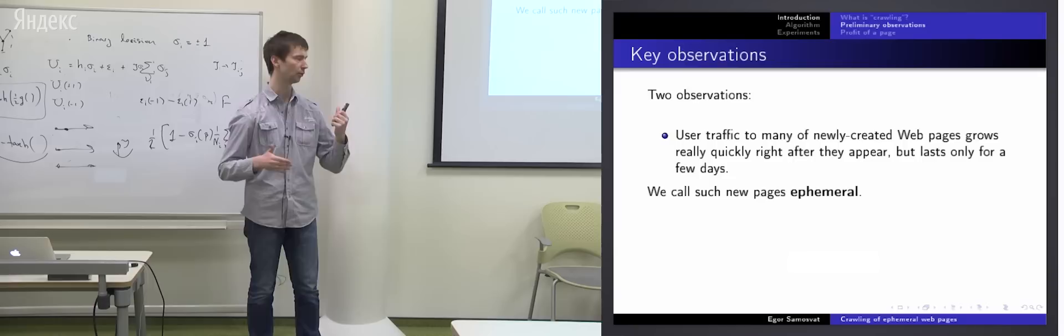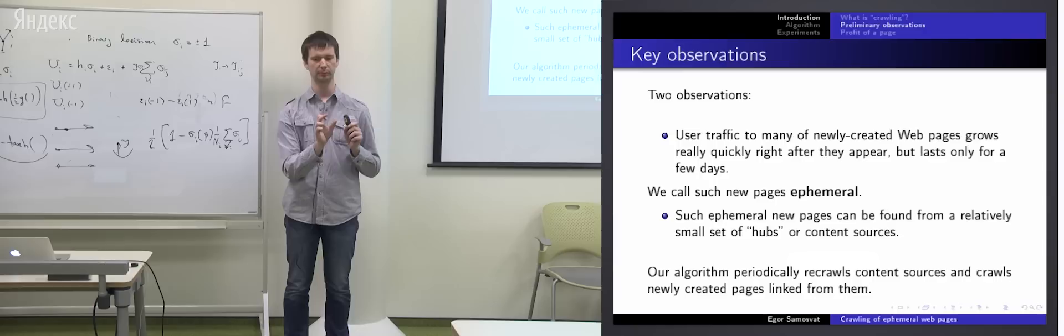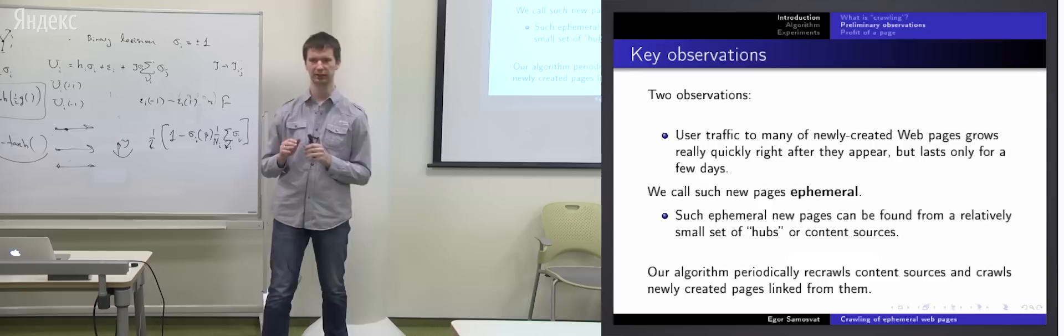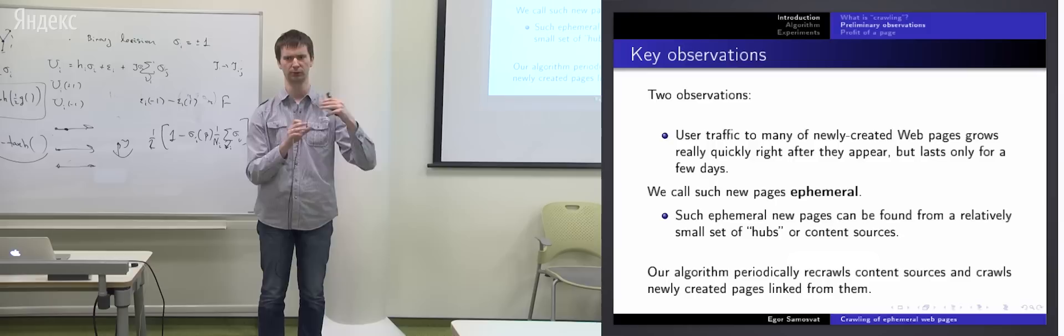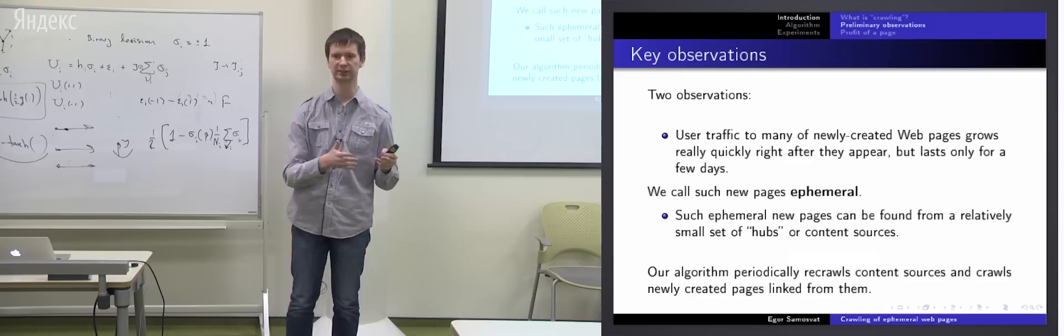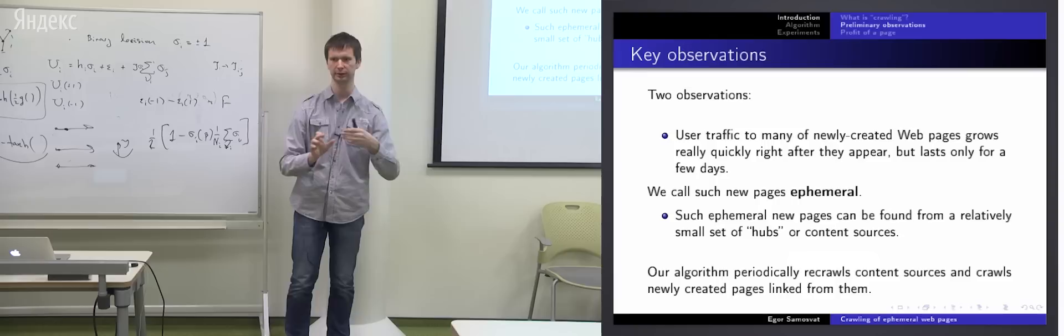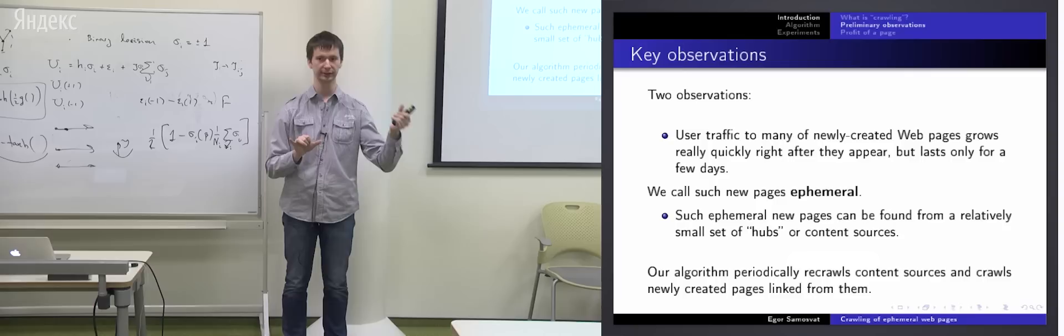The second observation is that the most of such pages can be linked from a small amount of pages, hubs, so we also call them in this work content sources. Examples of such pages are main pages of hosts, also categories on news sites, for example economics, politics, and so on. These pages are starting points for your web browsing usually. So our proposal is to monitor these hub pages and to crawl web pages which we found. But it's not so easy because actually we need to divide our resources between crawling of new pages and monitoring of these hub pages. And it's an optimization problem which I will formulate later how to divide these resources.